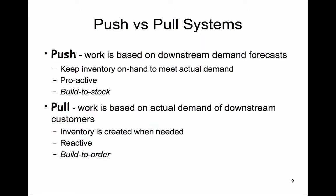It is important to understand how demand is generated and how the supply chain responds to it. Is it based on a push or pull system? In a push system, work is based on downstream demand forecasts — one keeps inventory on hand to meet actual demand, a more proactive approach anticipating customer demand. In a pull system, work is based on actual demand of downstream customers; inventory is created when needed, a more reactive approach responding to actual customer demand.